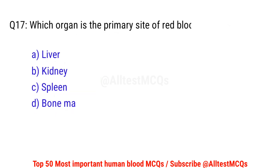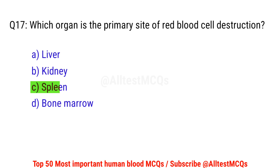Question number 17. Which organ is the primary site of red blood cell destruction? Right option is C. Spleen.